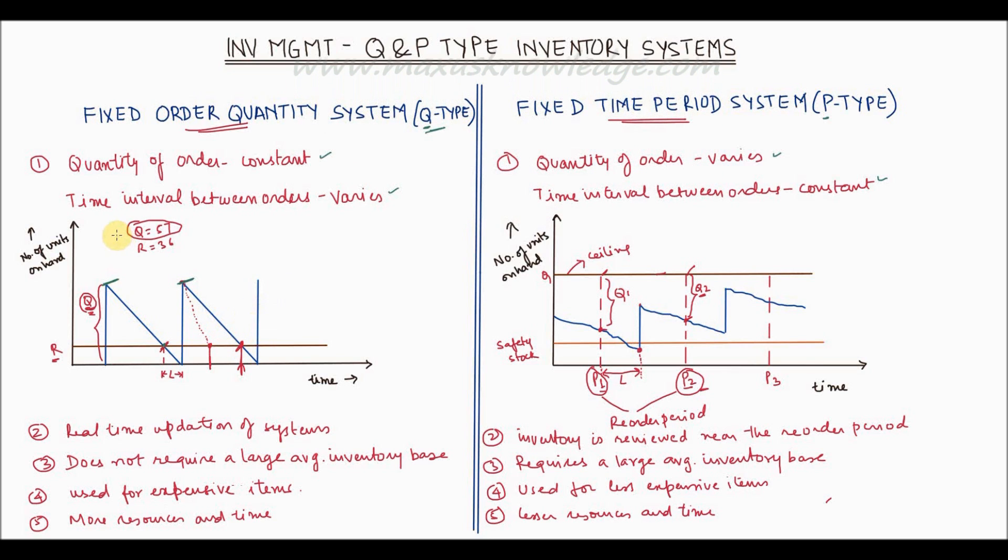For example, you can have Q as 57 and R as 36. So as soon as the inventory on hand reaches 36, again an order of quantity 57 is placed on the vendor and the replenishment cycle starts.